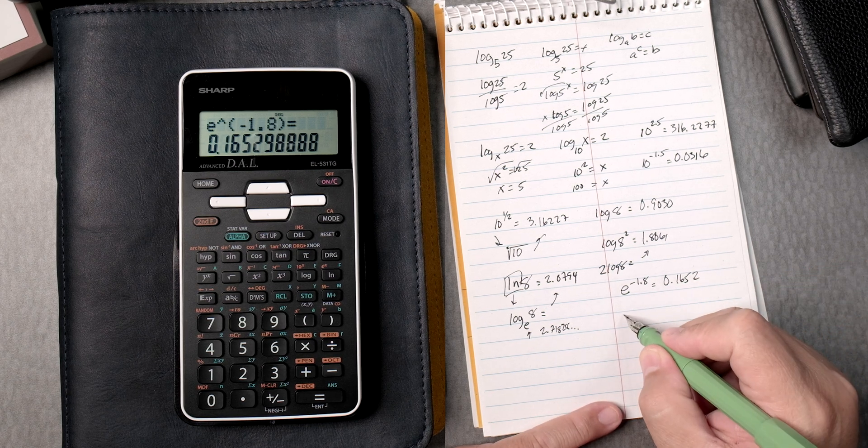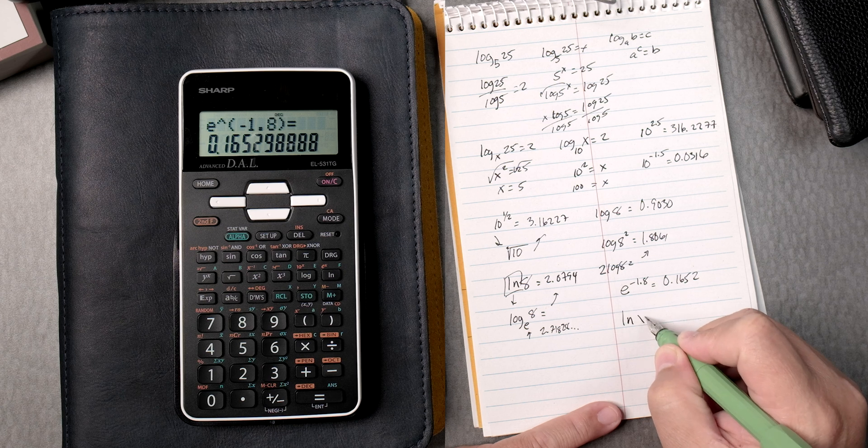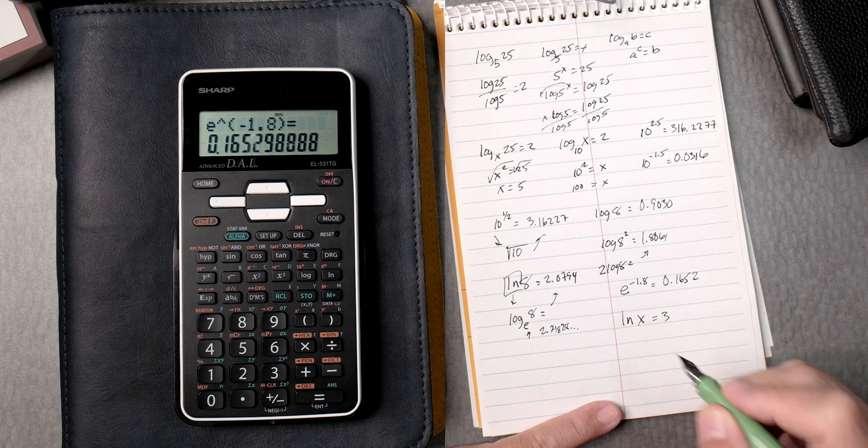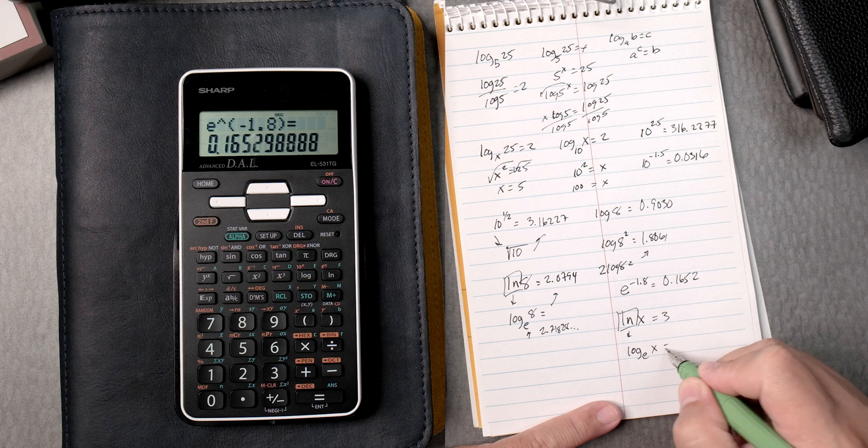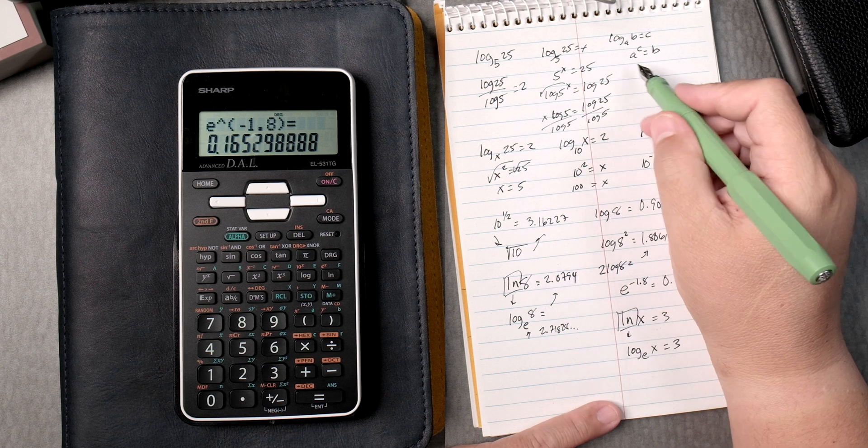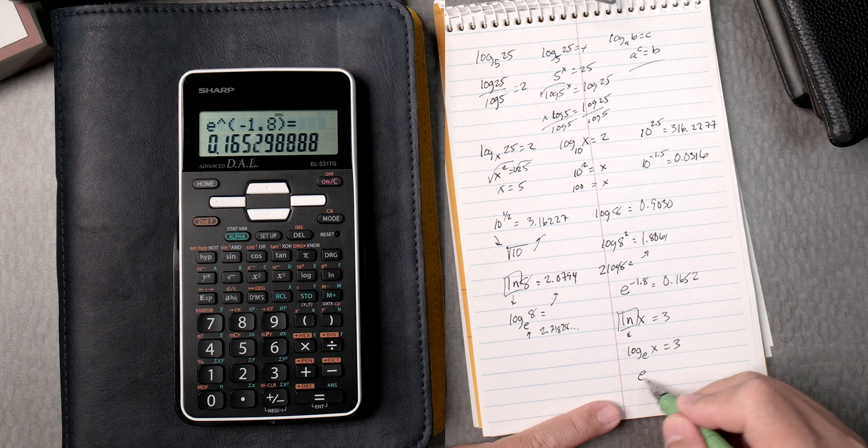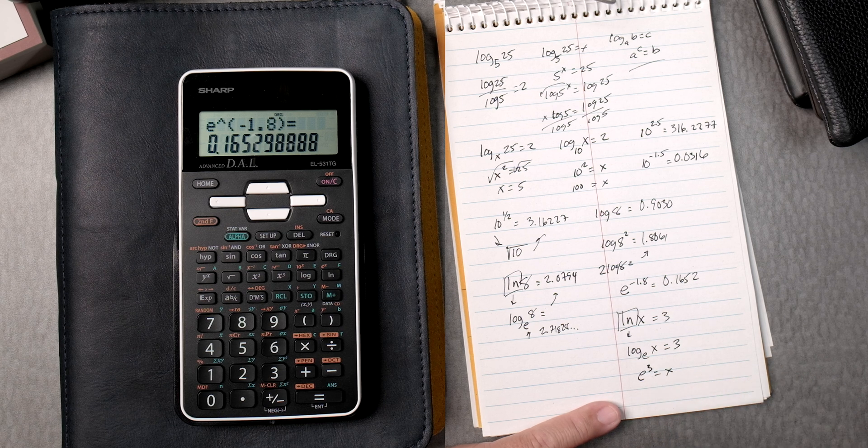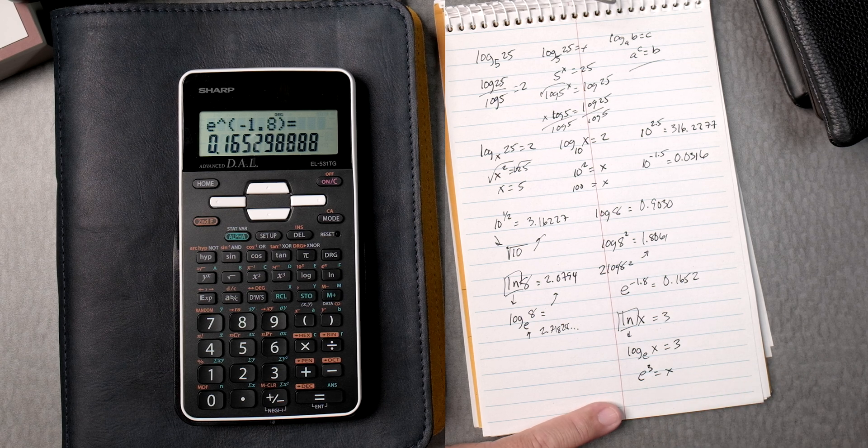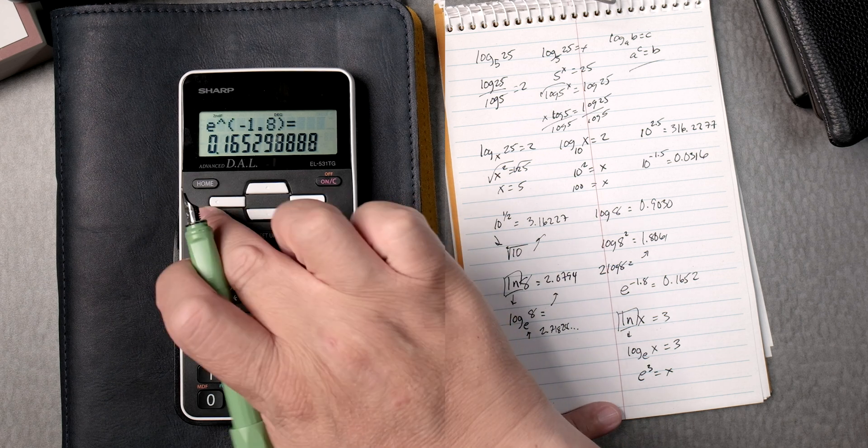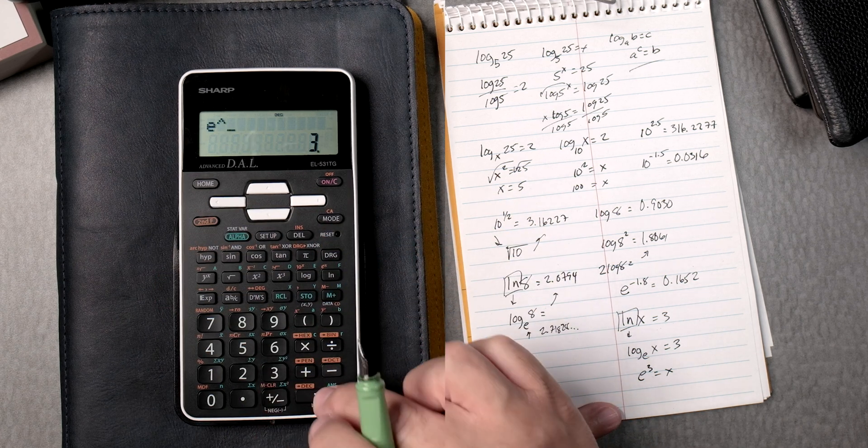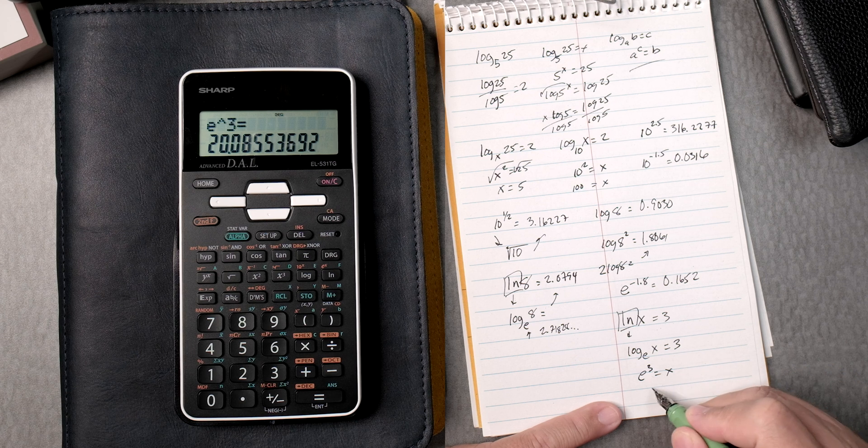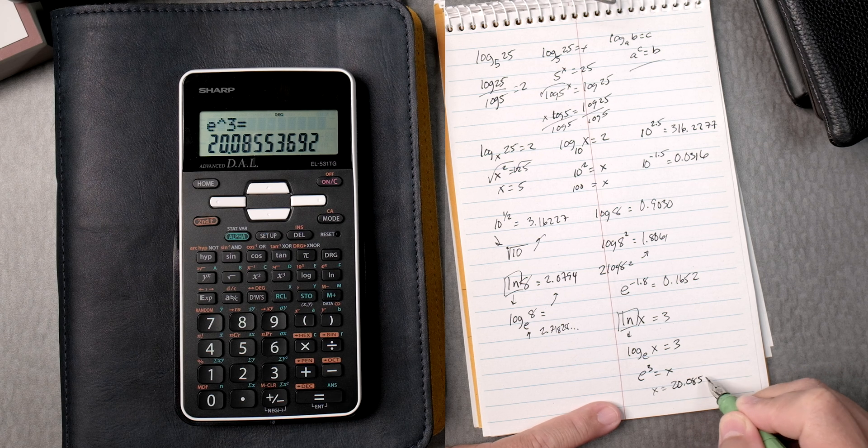Then, what about if you had the natural log of x equals 3? Well, we know the natural log really is the log of e to the x equals 3. Then we have this rule that says e to the third equals x. Then, that's going to be easy. We find e to the x and we do to the third power equals, and that gives you 20.0855.